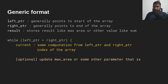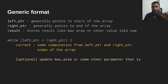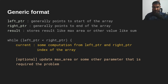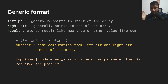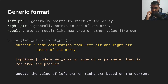This next part is optional. It is used in cases where the array is not sorted and we have to find a maximum area — like water stored between buildings. In those cases, the current represents the current area using the left and right pointers, and we update the max area to be the maximum of either the existing max area or the current area.